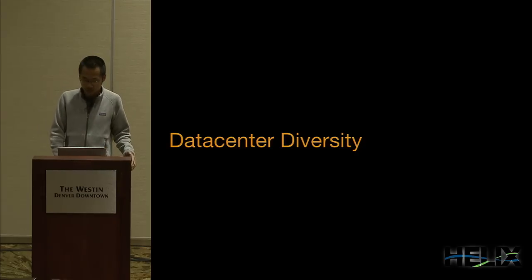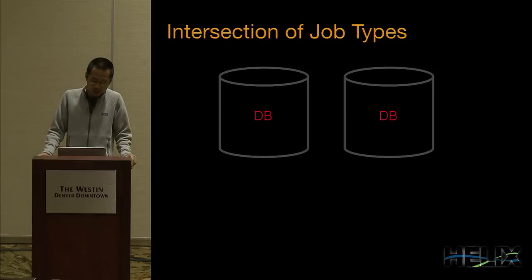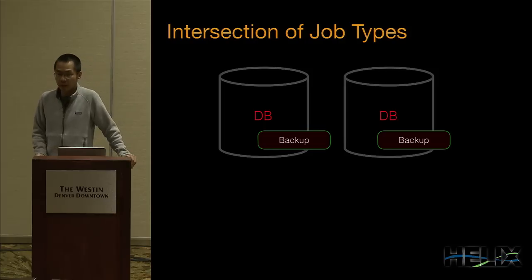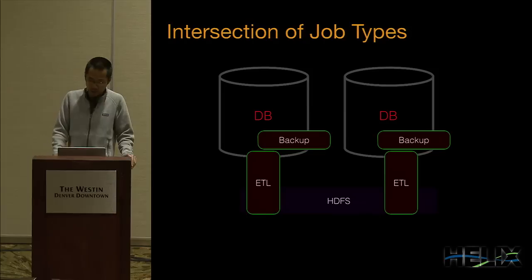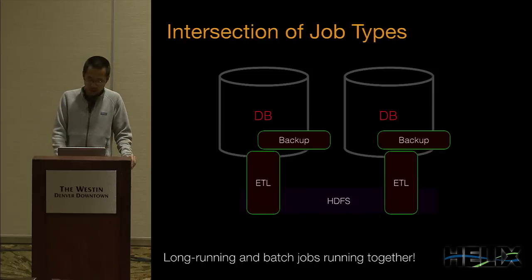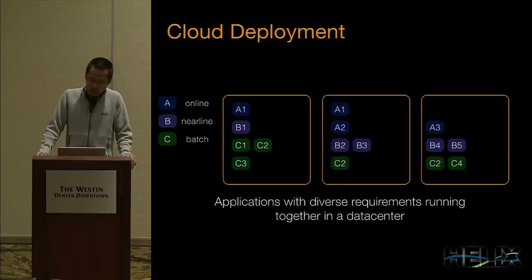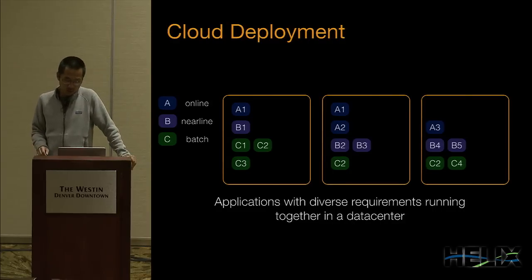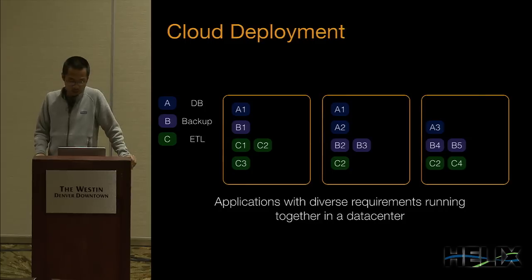In a data center, we see a lot of diversity. We have different types of jobs running — for example, a database service with two partitions where each partition may run backup jobs that periodically take backups, and ETL jobs that take snapshots and transfer them to HDFS. There are different types of jobs: both long-running services and batch jobs running together in a data center. We can have online services, near-line applications, and batch applications distributed across the data center, with multiple types running on each physical node.